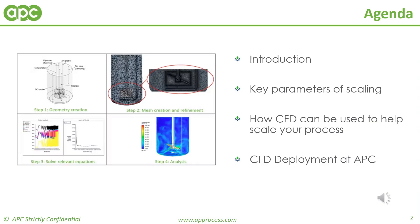I'd like to start with a high-level overview of what we will cover today. The first section will cover the importance of scaling your process and the key parameters which must be understood for a successful scale-up or scale-down. In the next section I'll discuss how computational fluid dynamics, or CFD, can be used to help scale your process. In section 3 I'll discuss how APC deploys CFD to solve scale-up difficulties posed by industry through a series of case studies.